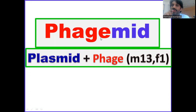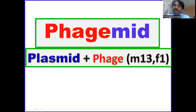Phasmids are hybrid or chimeric vectors that have the properties of both plasmids and single-strand DNA phages. Such vectors are called phasmids.